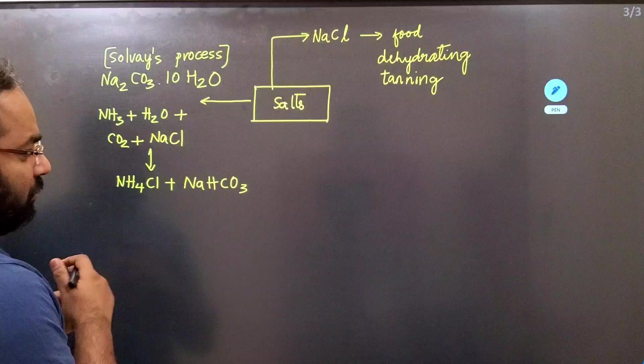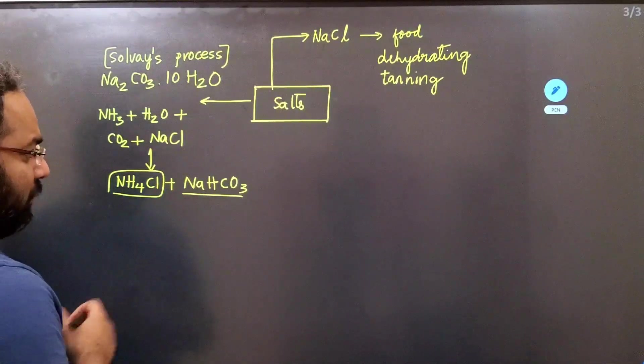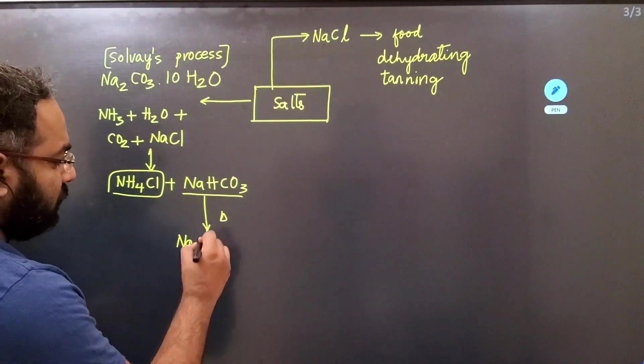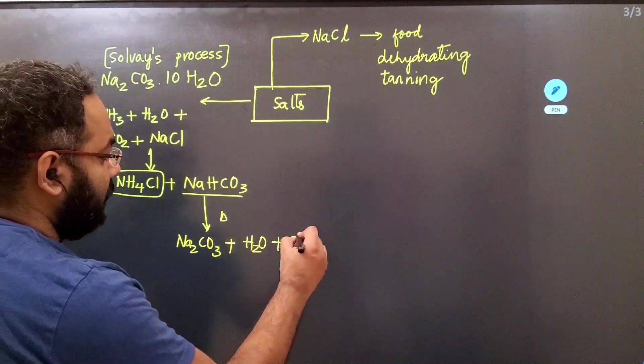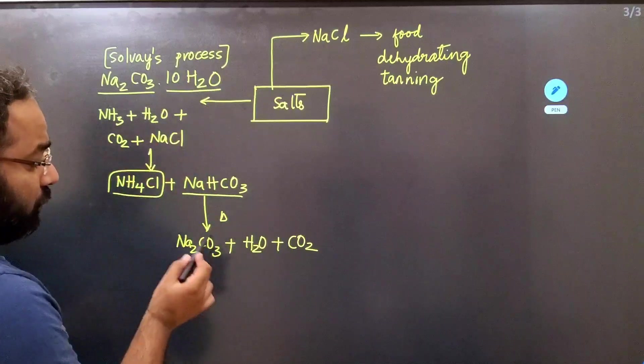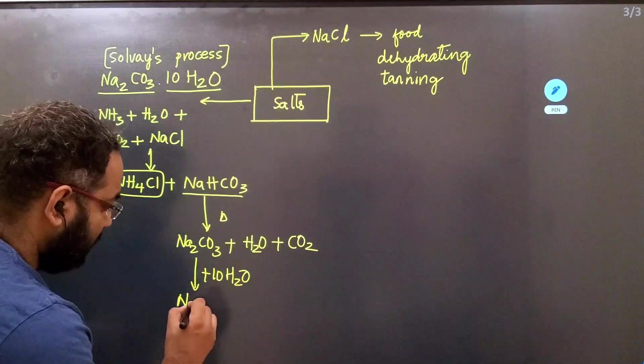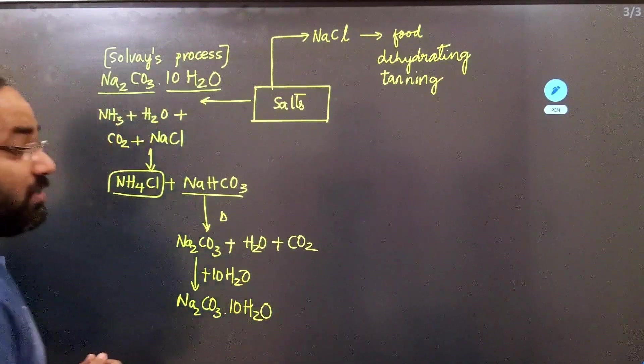Then after this, by the process of filtration, remember this is highly water soluble, this is sparingly soluble, so you will be able to filter it out very quickly. Once you filter it out, just heat this. When you heat it, you will get Na2CO3 plus H2O plus carbon dioxide. You are almost there. You need Na2CO3·10H2O. You already have Na2CO3. To this, if you just add 10H2O, you get a crystal salt which is Na2CO3·10H2O, which is called as washing soda.